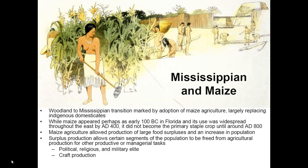The transition from the woodland period to the Mississippian period is marked by the adoption of maize agriculture. Maize was introduced to the eastern United States from Mesoamerica and largely replaced the small-seeded indigenous domesticates cultivated by earlier woodland peoples. Maize first appeared perhaps as early as 100 BC, first appearing in Florida, introduced via the Caribbean from northern South America rather than northward through Mexico and across the Great Plains. A distinctive form of processing dried maize kernels using a wooden mortar and pestle was found throughout the eastern United States, the Caribbean, and northern South America.